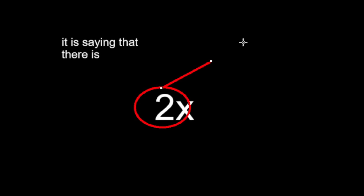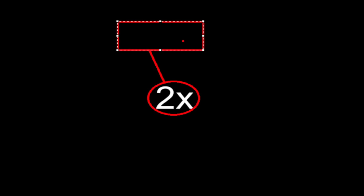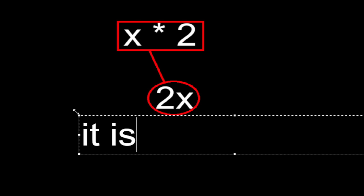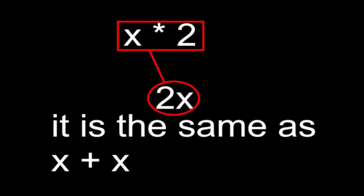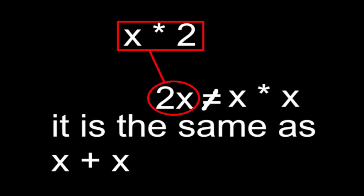When you see something like this, it is saying that there are two lots of the value x. The coefficient of x is 2, so it's just x times 2. It is the same as x plus x, but not x times x — that is x squared.